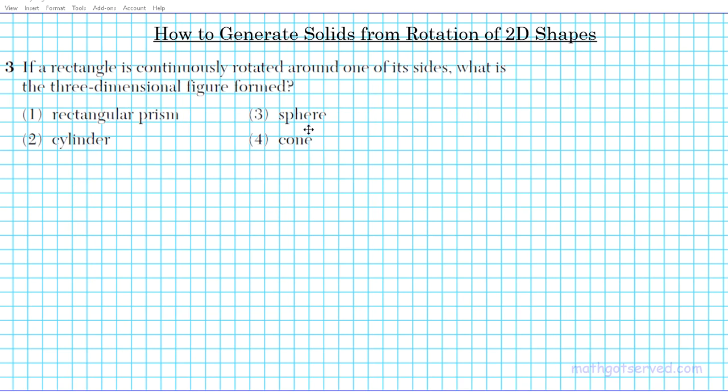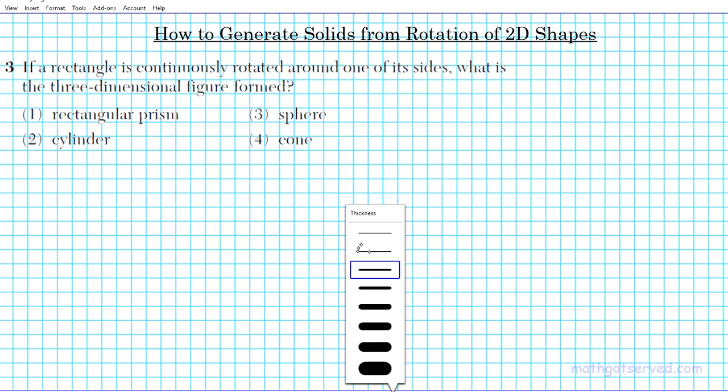All righty, so we have rectangular prism, we have sphere, cylinder, and cone. The first one, rectangular prism, it's impossible to get a rectangular prism from rotating a rectangle because the rectangular prism does not have a circular outline. So the answer cannot be option number one, a rectangular prism, because it does not have a circular outline.